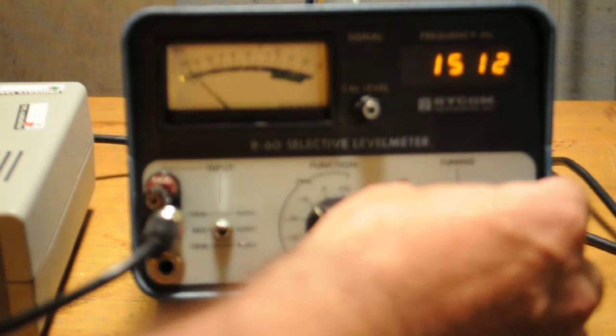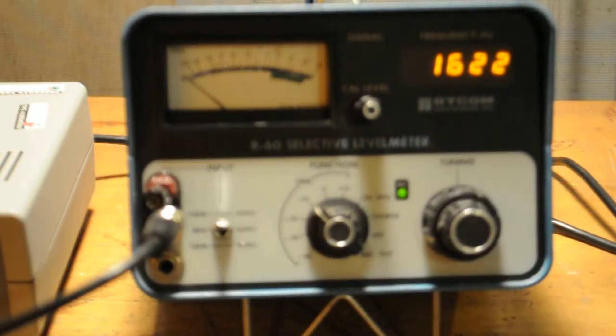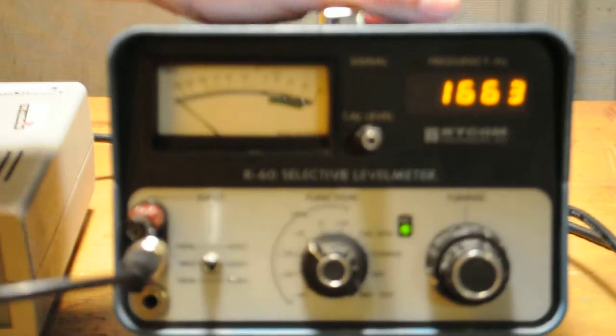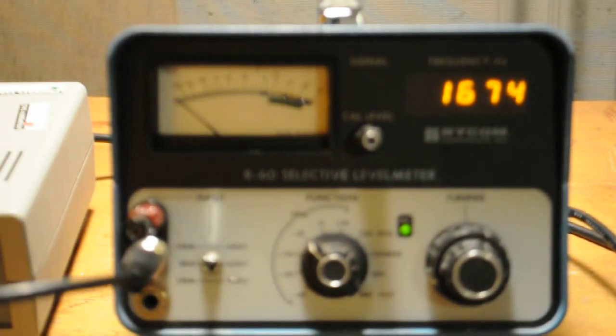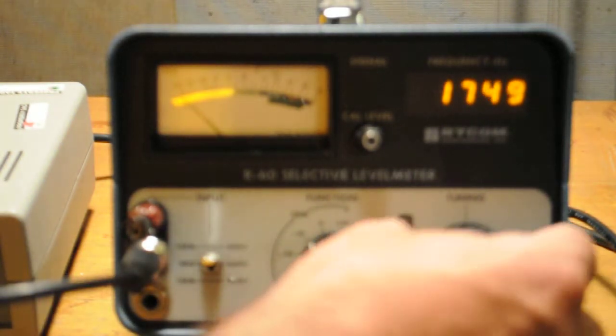There's no demodulation on this thing, so there's no audio output on it. There is a square wave tracking output. This is probably for a spectrum analyzer or an oscilloscope, and will put out an equivalent signal to what we're receiving here.